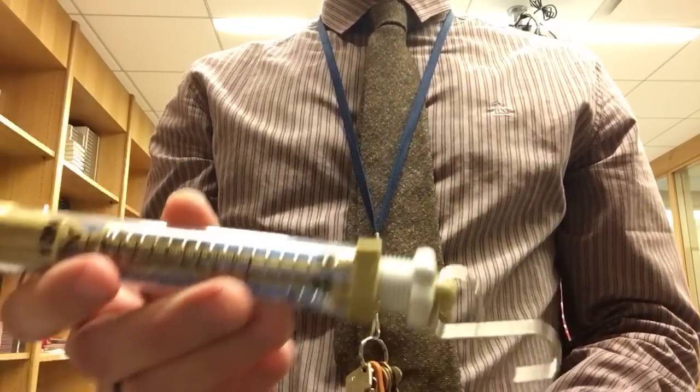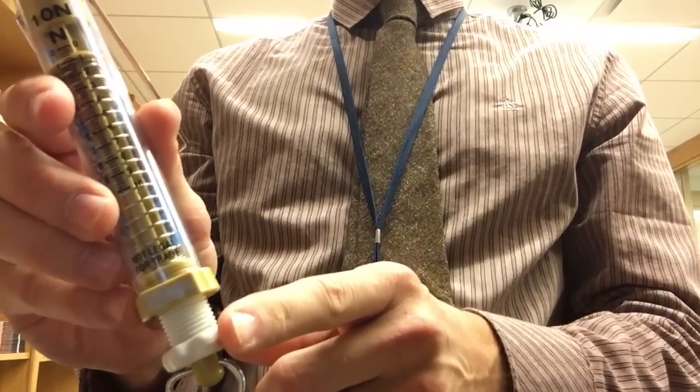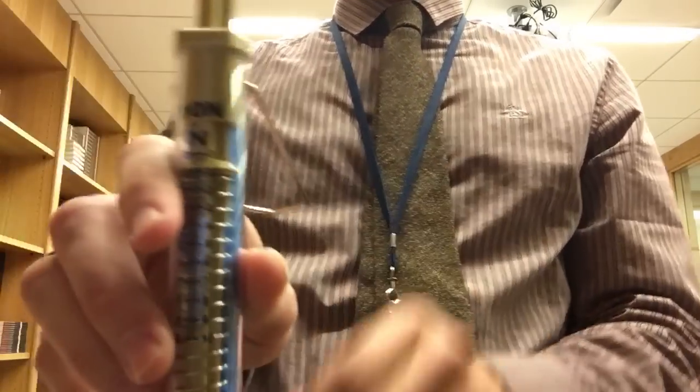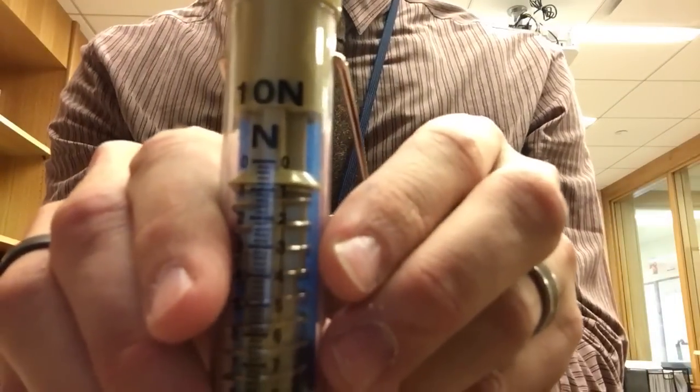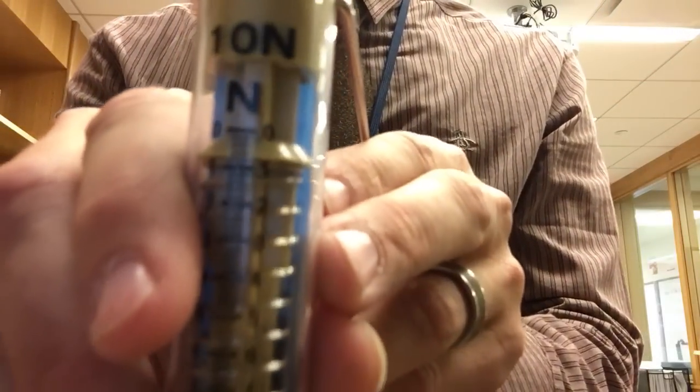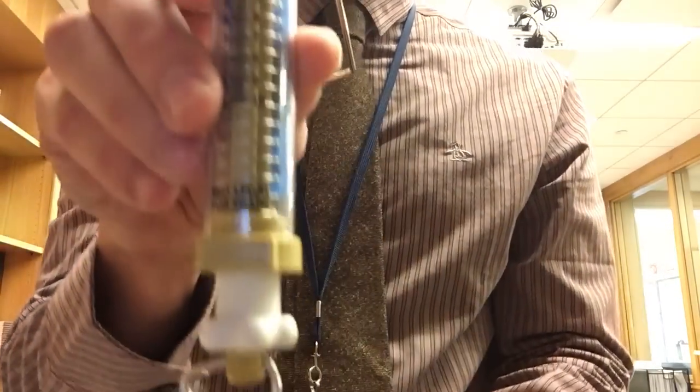A couple things about this. First of all, all spring scales have a little knob on them. Sometimes it's at the top, sometimes it's at the bottom. And this knob works as follows. You notice right now I'm not pulling on this thing, and it doesn't say 0. It says closer to 1.